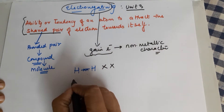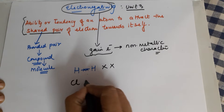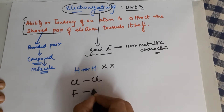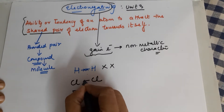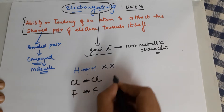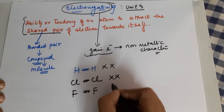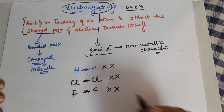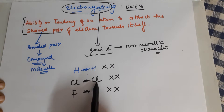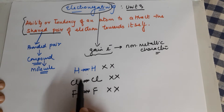Similarly, Cl bonded to Cl, or F bonded to F — all these will not show any electronegativity difference. The reason is both atoms are the same; they have equal tendency to pull the shared pair of electrons, so the shared pair remains exactly in the middle.